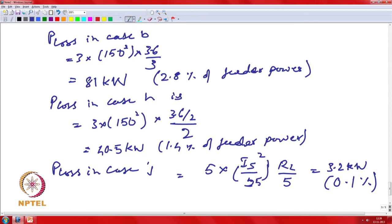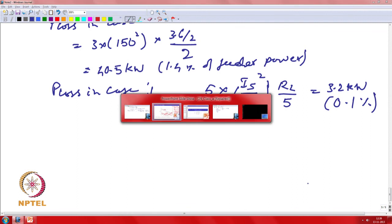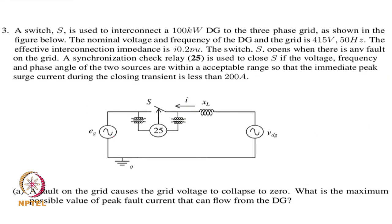The second problem is about switching between a DG and the grid. You have a switch interconnecting the DG and the grid and want to find the transient currents under two conditions: first, when operating the DG in parallel and a fault makes the grid voltage a dead short, causing a transient current to flow out; second, when the switch re-closes after the fault with the grid and DG voltages close but not exactly identical.